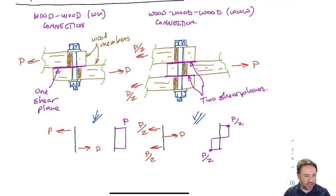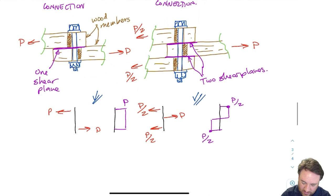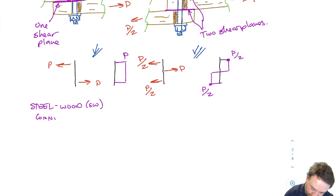I haven't changed the overall loads; I've basically split the resistance into two sides — one on each side of the bolt. This is the same situation as in steel design where we consider the number of shear planes. So that's one shear plane versus two shear planes — I'll draw a few more examples of what single and double shear plane connections look like.